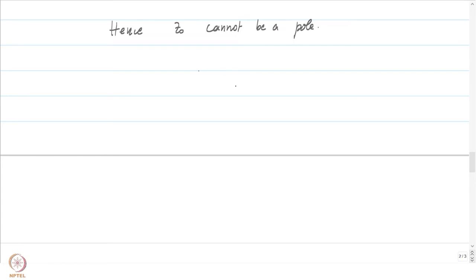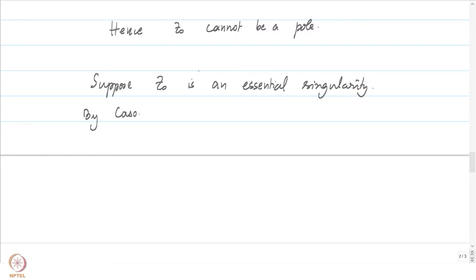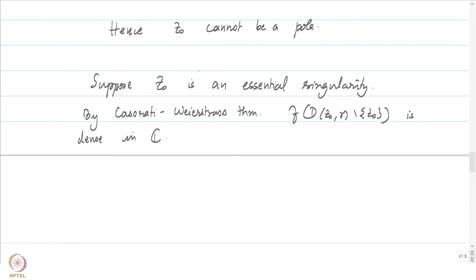Let us now rule out the possibility that z₀ is an essential singularity. Suppose z₀ is an essential singularity. We are going to use the Casorati-Weierstrass theorem. By the Casorati-Weierstrass theorem, f(D(z₀, r) minus {z₀}) is dense in ℂ. Given w in ℂ, there exists a sequence z_n converging to z₀ such that f(z_n) converges to w.